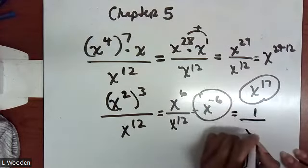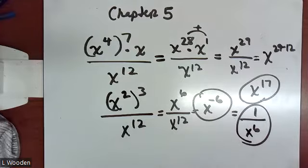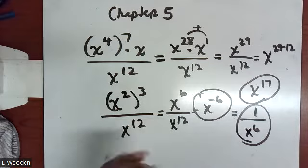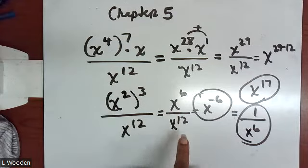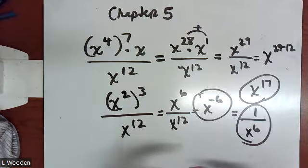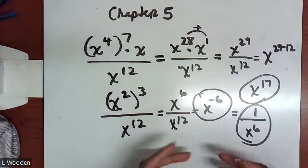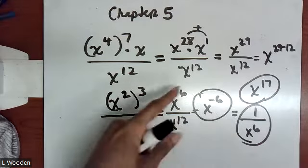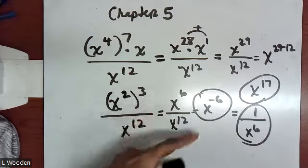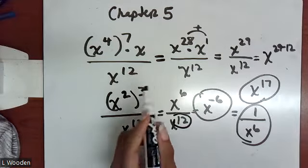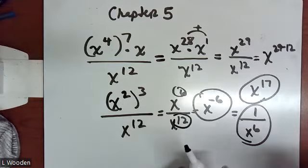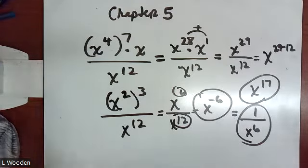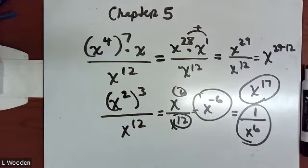When you have a negative exponent, you must relocate it as a reciprocal. Rewrite it as one over x to the sixth power, because that's really what it is. If you look at the original problem, you have x⁶ over x¹²: more x's in the denominator, which means x's should remain at the bottom when finished. With 12 x's at the bottom and only six at the top, by the time you cancel, you'll have six left at the bottom. That helps you catch your own mistakes.